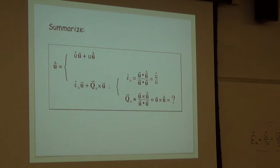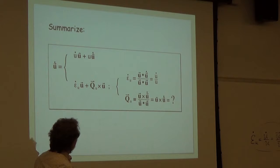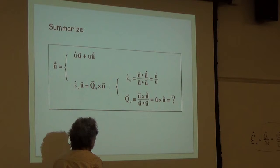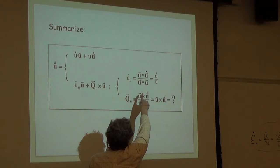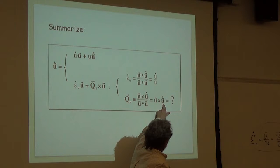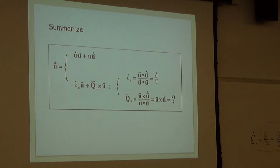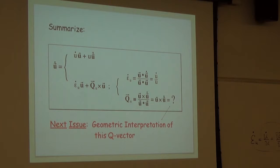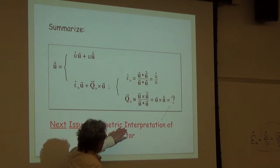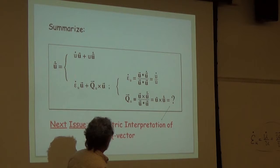Let's summarize what we've discovered. At this point I've got two different ways to express the derivative. The first is what we started with — differentiating magnitude times direction via the product rule. The second comes from the parallel-perpendicular decomposition: the strain rate multiplying the vector, plus the mystery Q vector crossed with the vector. We have mathematical expressions for the strain rate and for the Q vector. The remaining question concerns the geometric significance of that Q vector — can we find a physical or geometric interpretation for it?